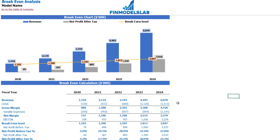On the breakeven tab you can find the revenue breakeven level calculation and breakeven chart. For this particular use case, the revenue breakeven level is less than the actual revenue, which means the company is profitable.